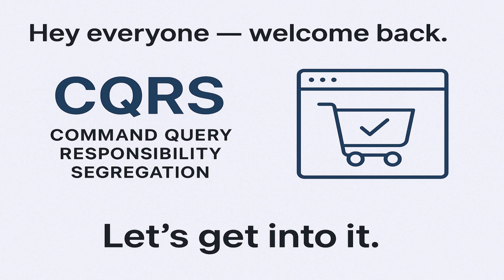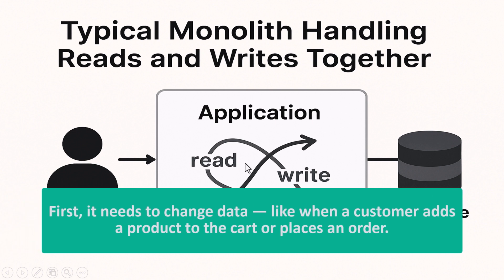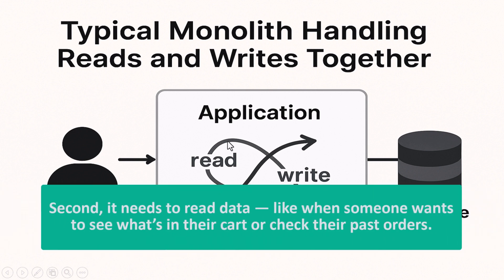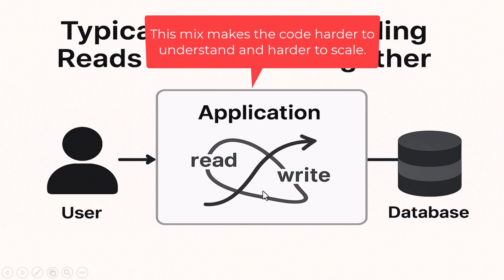Even if you're just starting out as a developer, let's get into it. Imagine you're building an online store, something like Amazon. Your app needs to do two things: first, it needs to change data, like when a customer adds a product to the cart or places an order; and second, it needs to read data, like when someone wants to see what's in their cart or check their past orders. Most apps try to do both using the same code and the same database. That works at first, but over time it becomes messy — you're mixing read logic and write logic in the same place. Reads are supposed to be fast and simple; writes are usually more complex, needing validation, business rules, maybe even transactions.